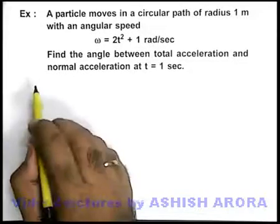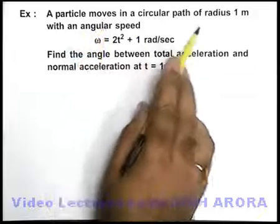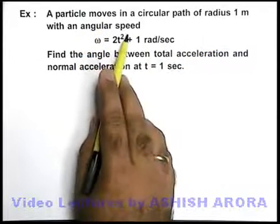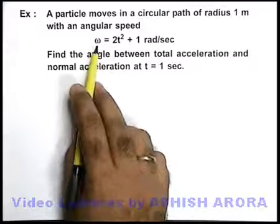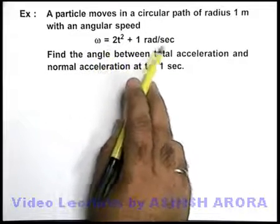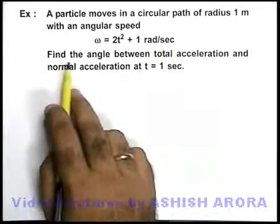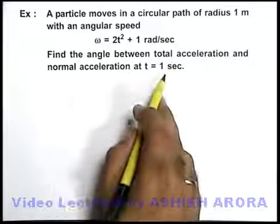In this example, we are given that a particle moves in a circular path of radius 1 meter with an angular speed which is varying with time, given as omega equals 2t squared plus 1 radian per second. We are required to find the angle between total acceleration and normal acceleration at t equals 1 second.